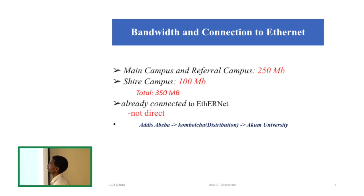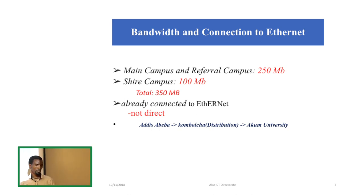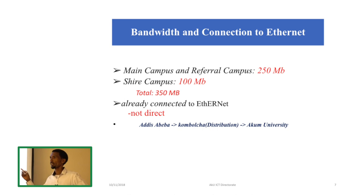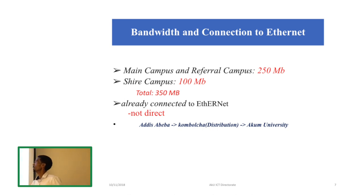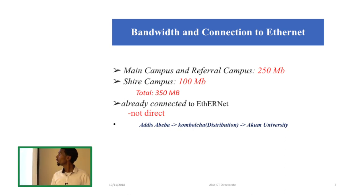Looking at bandwidth and connection to the internet, we have 250 megabytes for the main campus and referral campus, and 100 megabytes for the shared campus. In total, our university uses 350 megabytes.